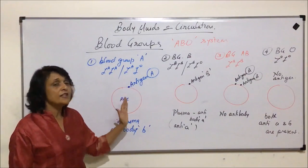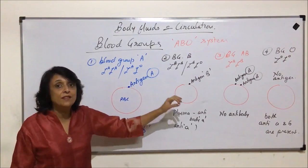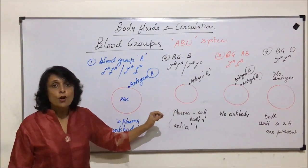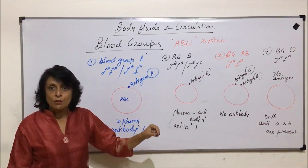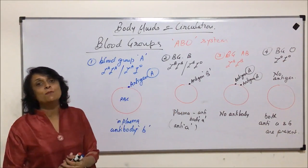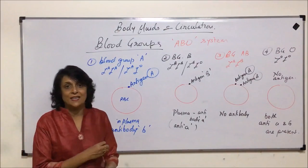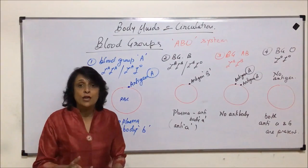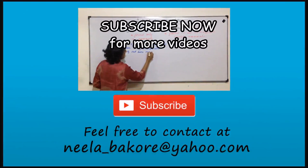Now that we have understood antigen and antibody relationships for each blood group, we will be able to understand which blood group can be given to a person of another blood group. Let us see what happens when blood transfusions or blood donations are done.